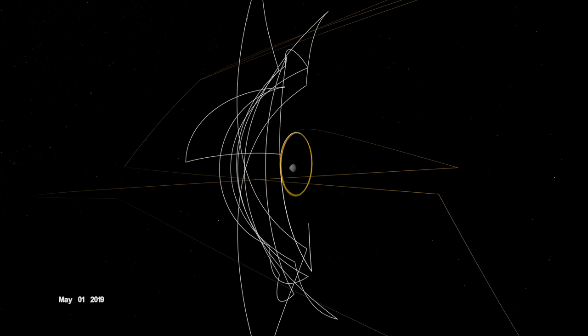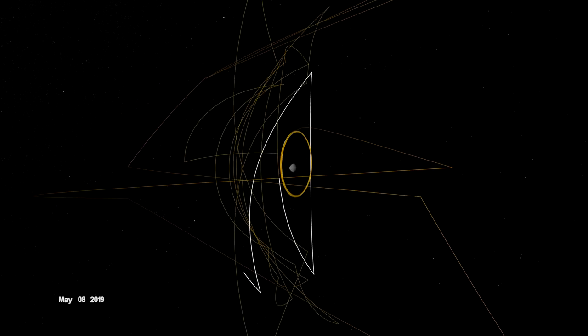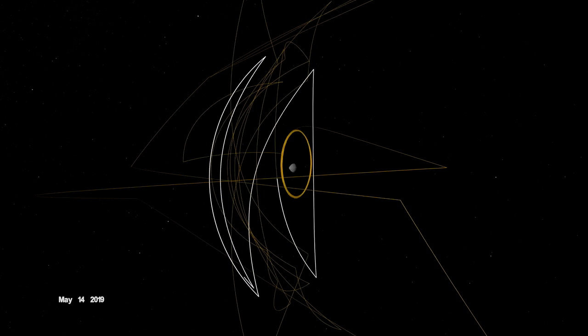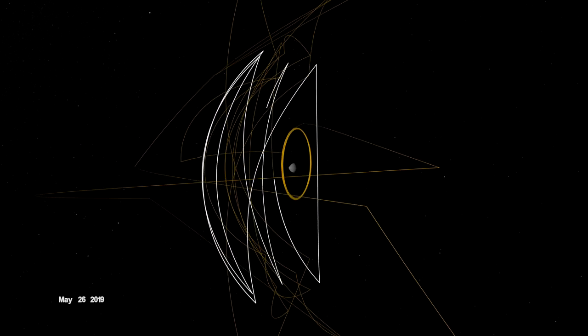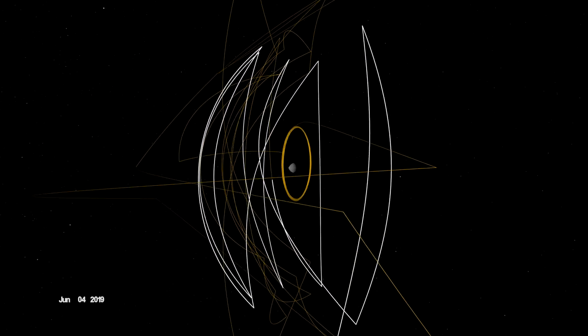During the detailed survey, OSIRIS-REx globally mapped Bennu at only 5 centimeters per pixel, the highest resolution of any planetary body, including Earth.